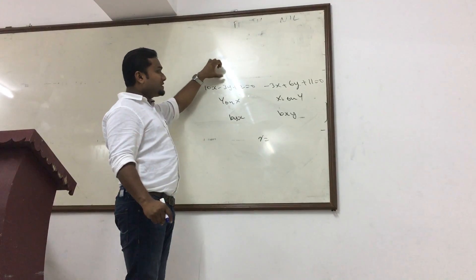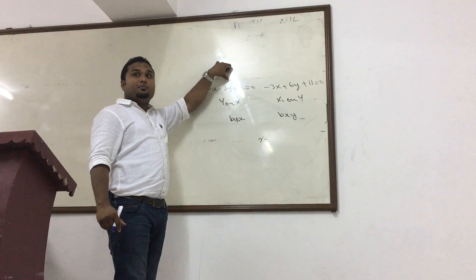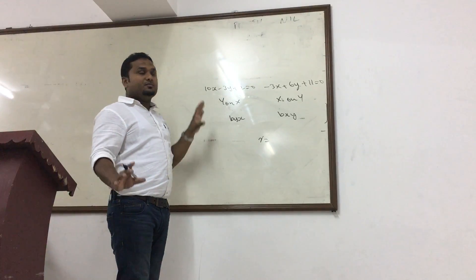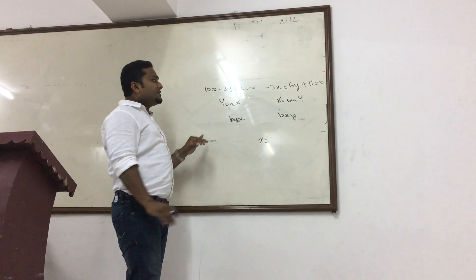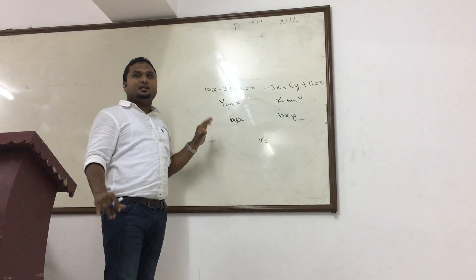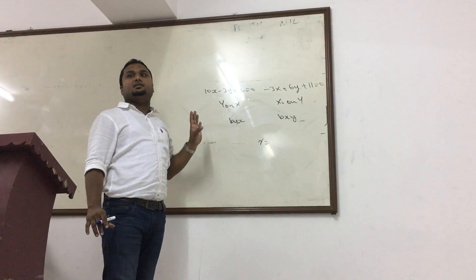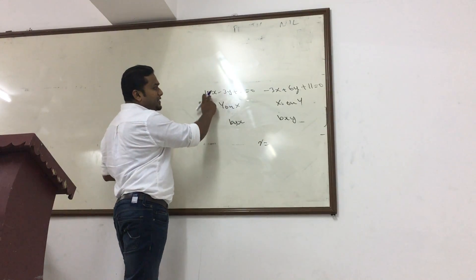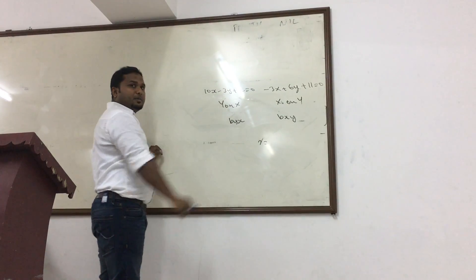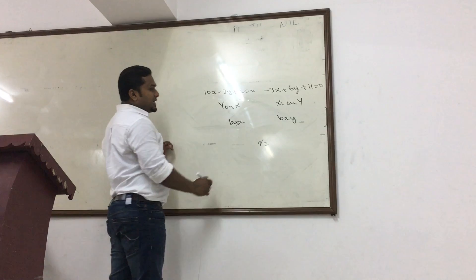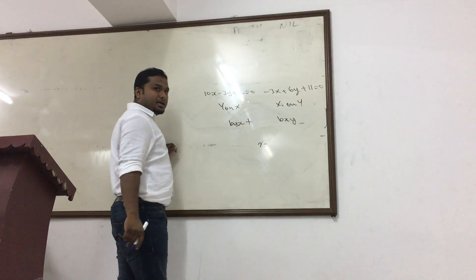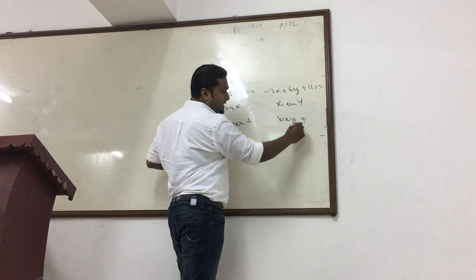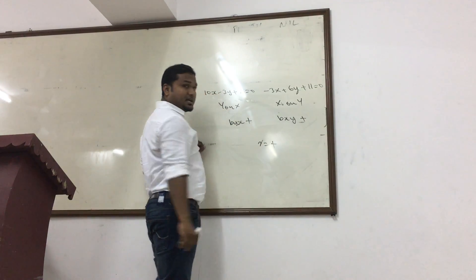For example, if you have 10x plus 3y, then 10x equals minus 3y, so the answer becomes minus. The rule is simple: if X and Y have the same sign, the answer is minus; if X and Y have opposite signs, the answer is plus. So in our problem, X and Y have opposite signs, meaning R is also plus.